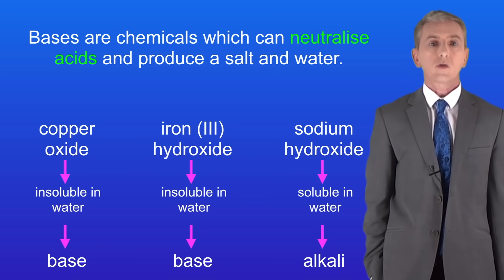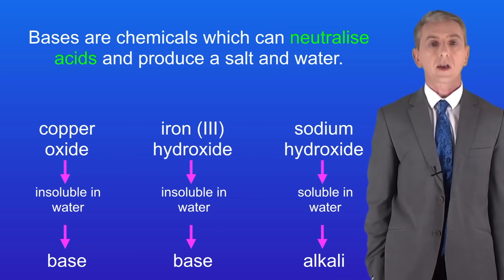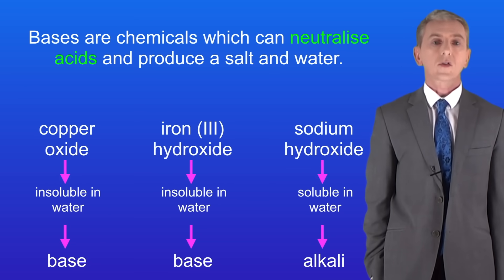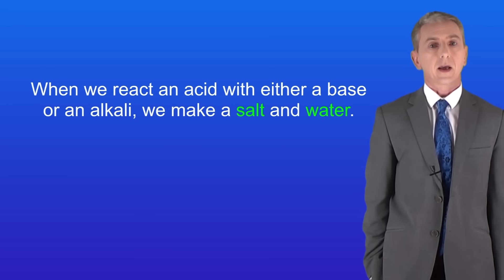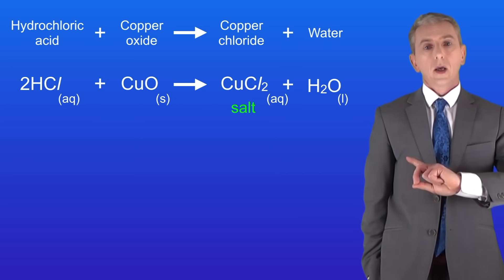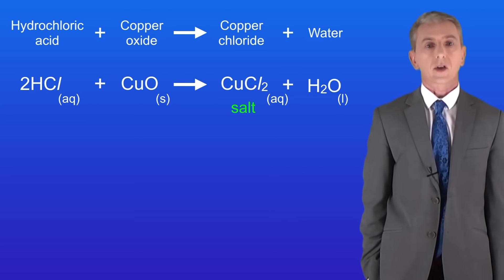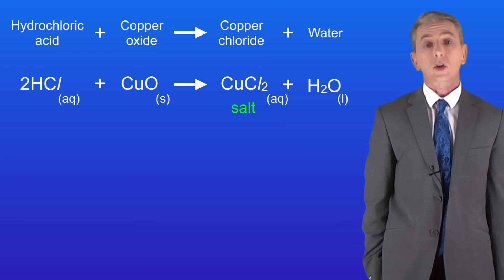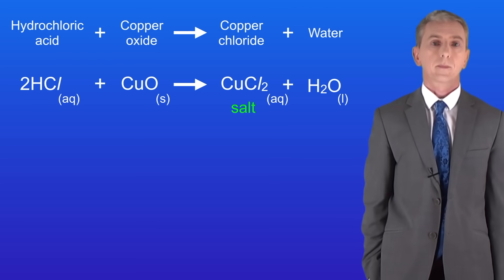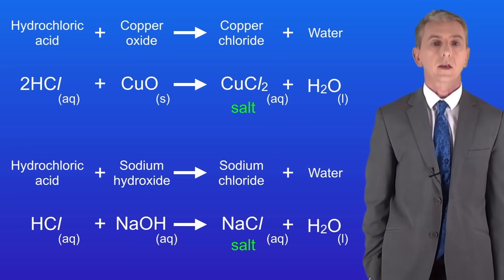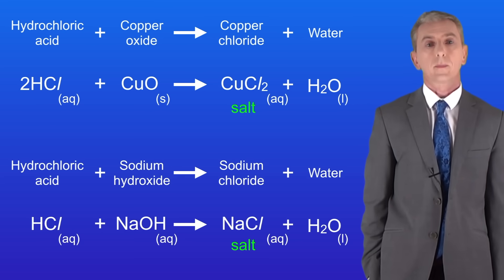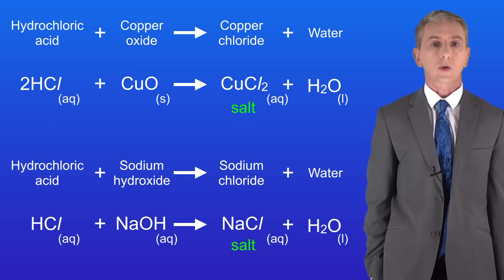In this video we're looking at the reactions of acids with bases, alkalis and metal carbonates. We're going to start with bases and alkalis. When we react an acid with either a base or an alkali we make a salt and water. For example, reacting hydrochloric acid with the base copper oxide makes the salt copper chloride and water. Here's hydrochloric acid reacting with the alkali sodium hydroxide — again we're making a salt and water, in this case the salt is sodium chloride.